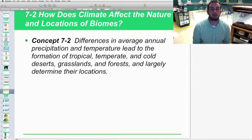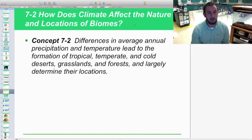Hey scholars, welcome back to chapter 7 of your AP textbook. We're taking a look at 7-2, How Does Climate Affect the Nature and Locations of Biomes? So let's specifically look at how climate literally affects the shape, look, and the different biomes of the earth.